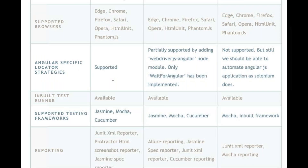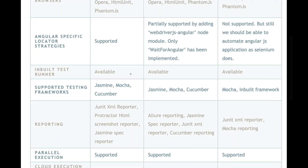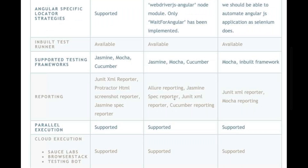Inbuilt test runner: all three tools have an inbuilt test runner, so it's yes for all. Supported testing frameworks: Protractor supports Jasmine, Mocha, and Cucumber; WebDriver.io supports Jasmine, Mocha, and Cucumber; Nightwatch has its own inbuilt framework. Popular libraries like Jasmine, Mocha, Grunt, and Chai are all supported by both Protractor and WebDriver.io.